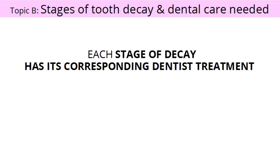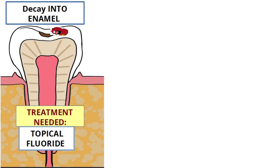Each stage of tooth decay has its corresponding dentist treatment. Tooth decay into enamel — the treatment needed is for the dentist to apply fluoride to the tooth. The fluoride helps rebuild the enamel. If you have tooth decay in enamel only, this can be reversed with good prevention, so the tooth decay hole heals up naturally and there is no cavity.